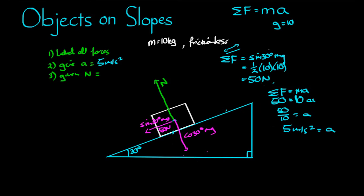The second part, what is the normal force. Since the object is neither floating off the plane like that, nor going into the plane like that, this force must balance this force. So in other words, the normal force is equal to cos 30 degrees mg, which is equal to root 3 on 2, 10 times 10, which is equal to 86.6 newtons.